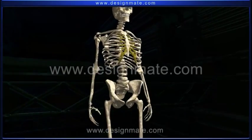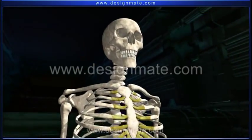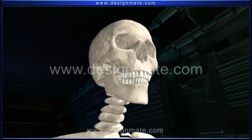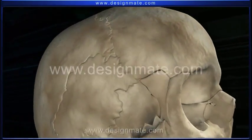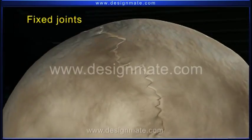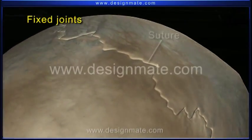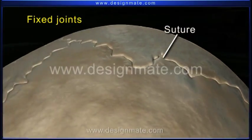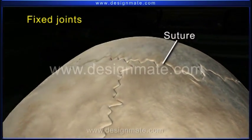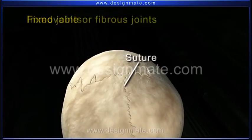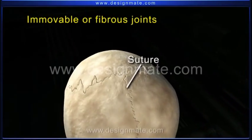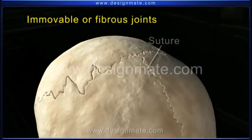As we focus on the skull, we find the flat skull bones held together by fixed joints called sutures. They do not allow movement, hence these joints are also known as immovable or fibrous joints.